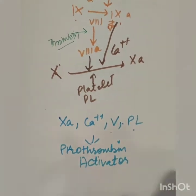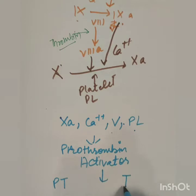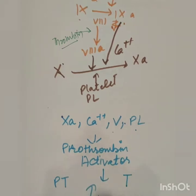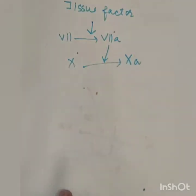Prothrombin activator is the main factor. What did the prothrombin activator do? The prothrombin converts into thrombin in the presence of calcium. What did the prothrombin do? It made thrombin.